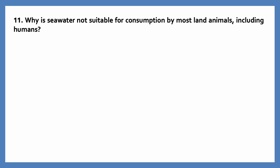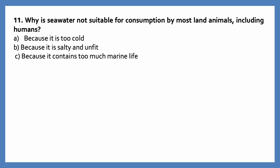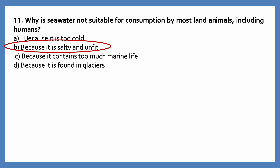Why is seawater not suitable for consumption by most land animals, including humans? Options are: because it is too cold; because it is salty and unfit; because it contains too much marine life; because it is found in glaciers. The correct answer is because it is salty and unfit.